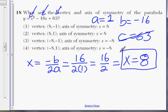If you look at the choices, the choices with x equals 8, it's actually choice 1 and 2. 3 is incorrect because you have negative 8, and 4 is incorrect because you have negative 8.